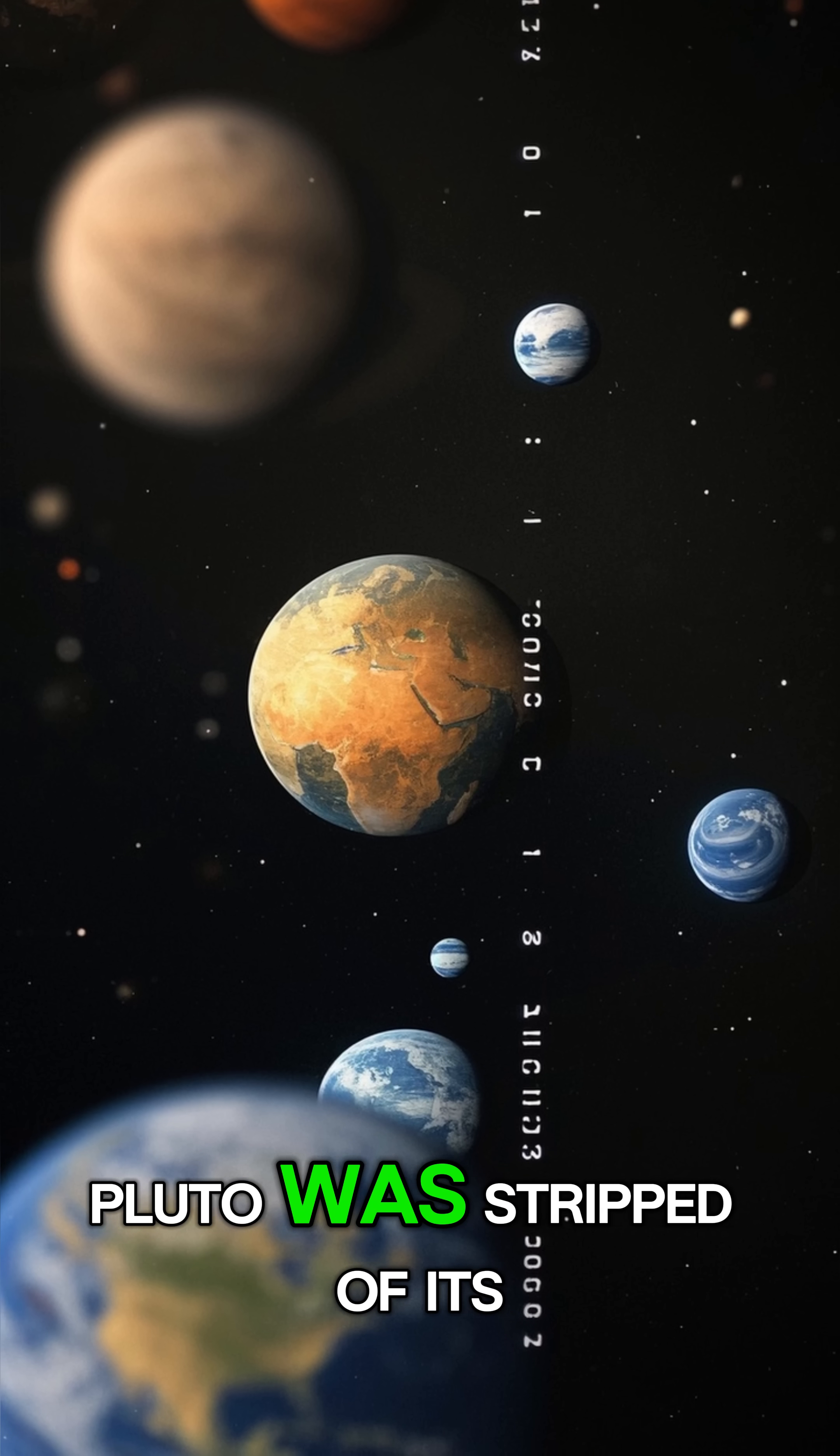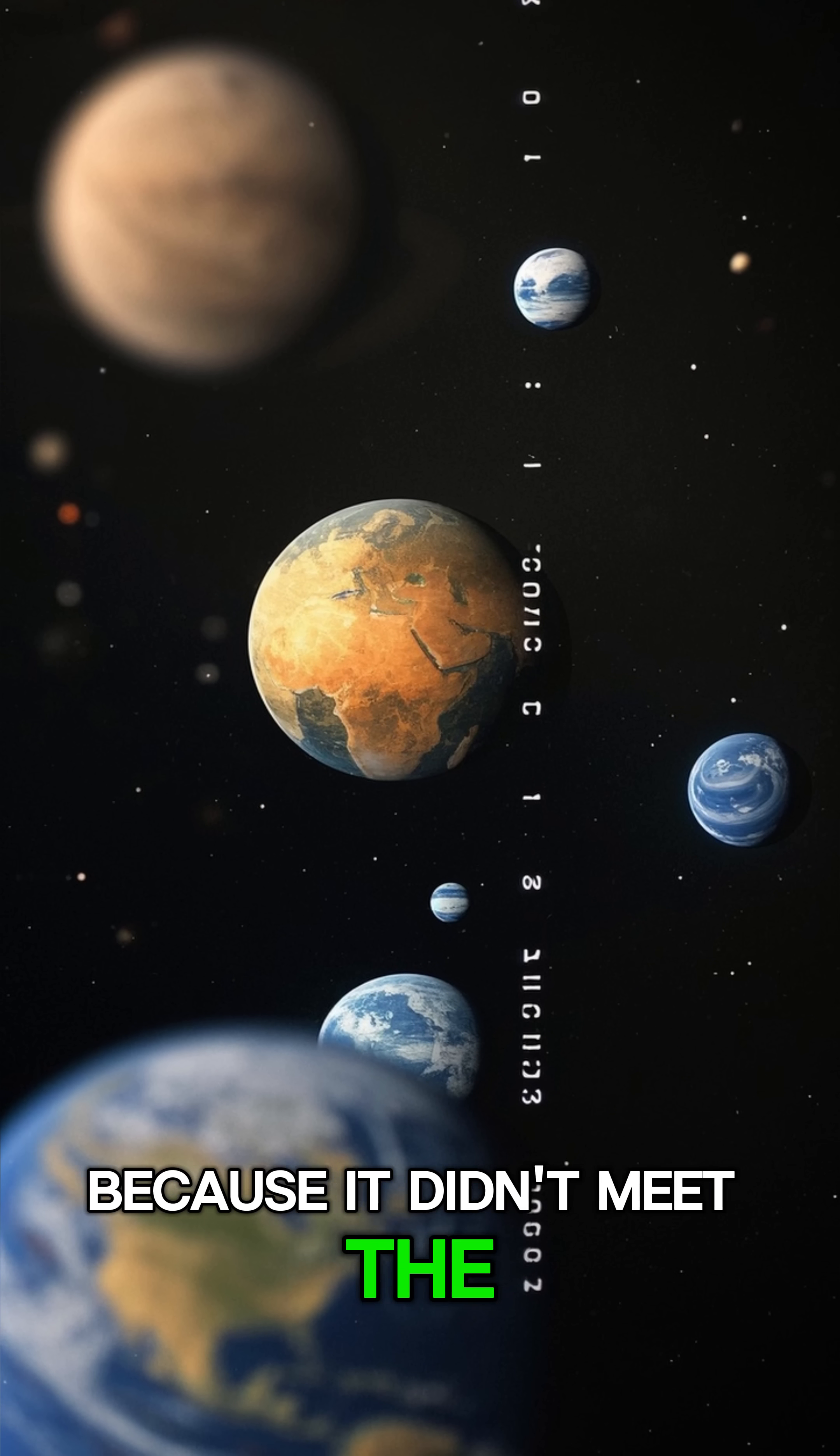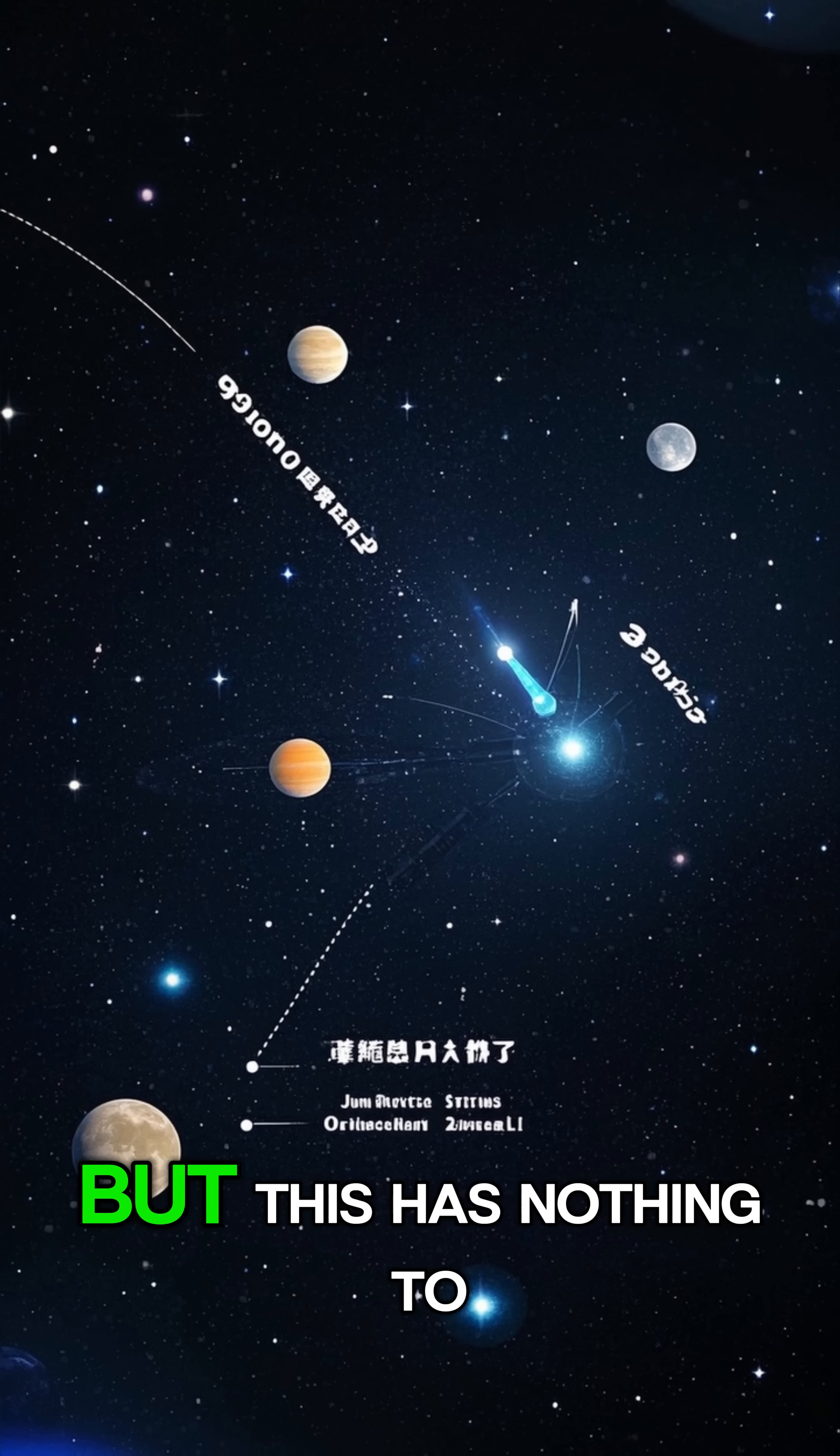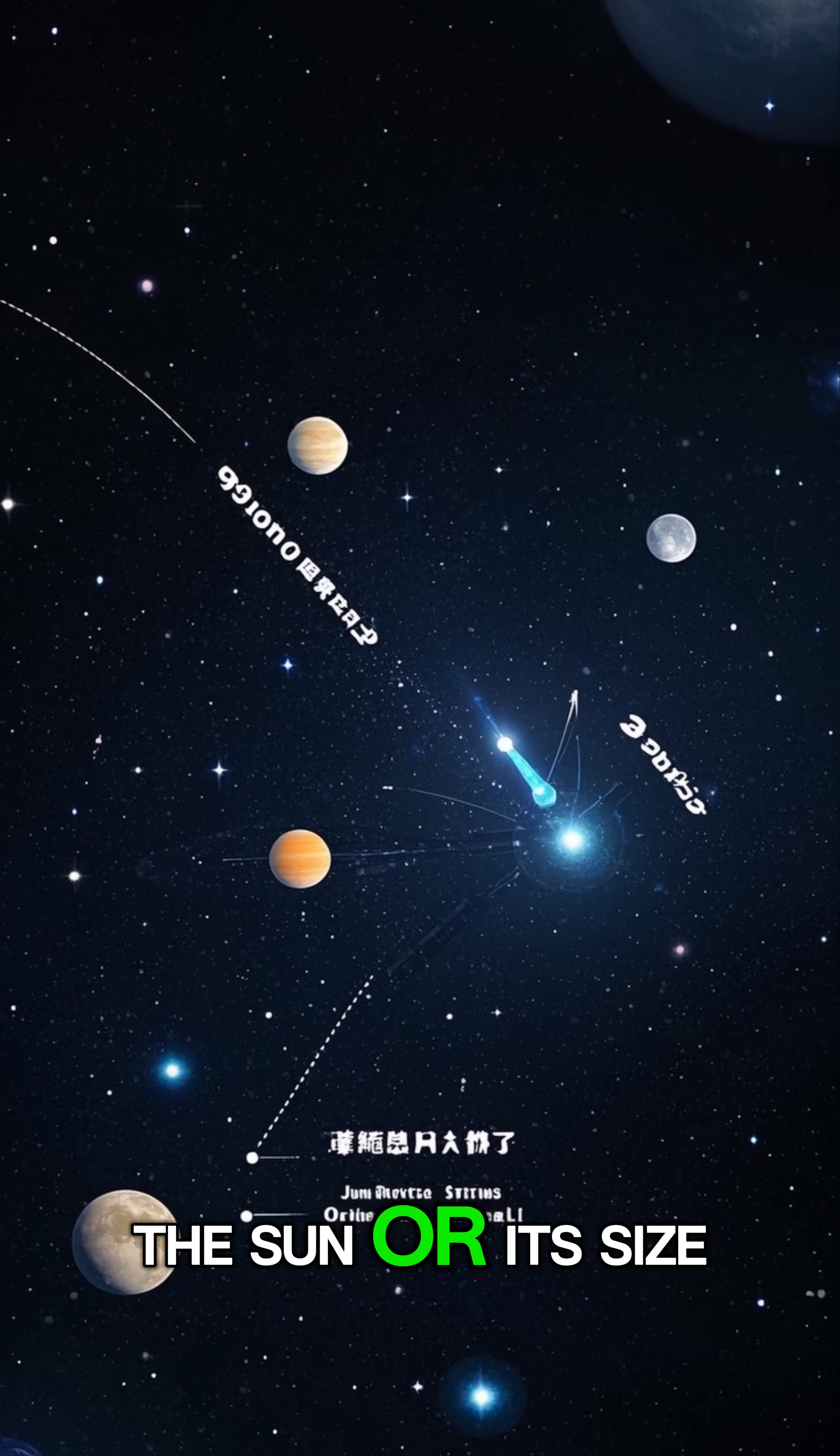In 2003, Pluto was stripped of its planetary status because it didn't meet the definition of a planet. But this has nothing to do with its distance from the sun or its size.